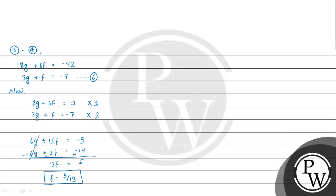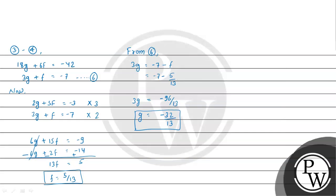Now using equation 6, we can write 3g = -7 - f. Substituting f = 5/13 gives 3g = -96/13, so g = -32/13.